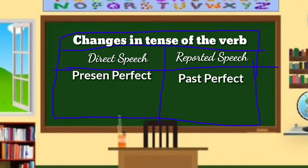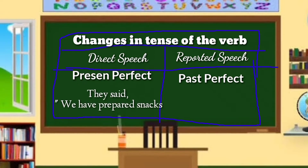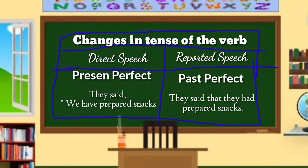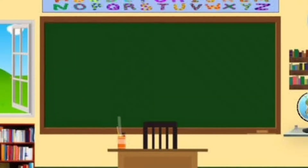Present perfect becomes past perfect. For example — DS: They said, 'We have prepared snacks.' RS: They said that they had prepared snacks. In direct speech, the verb 'have prepared' is in its present perfect tense. In reported speech, the verb becomes 'had prepared,' which is in the past perfect tense.